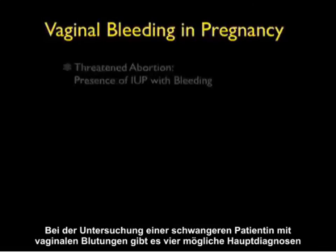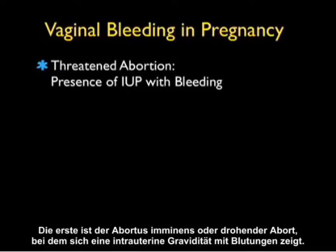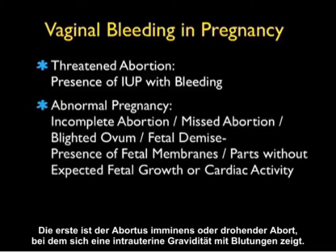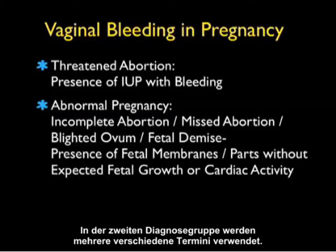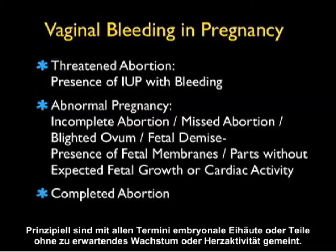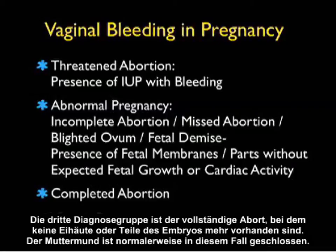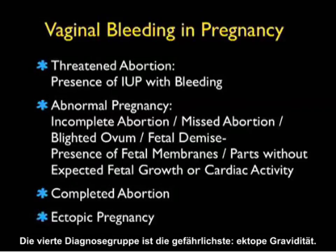When taking care of a patient who has vaginal bleeding in pregnancy, there are four main classifications of diagnoses. The first is a threatened abortion, defined as the presence of an intrauterine pregnancy with bleeding. The second encompasses several terms: incomplete abortion, missed abortion, blighted ovum, and fetal demise — all meaning the presence of fetal membranes or parts without expected fetal growth or cardiac activity. The third is a completed abortion with no further presence of fetal membranes or parts and a closed cervical os on examination. The fourth and most dangerous is ectopic pregnancy.